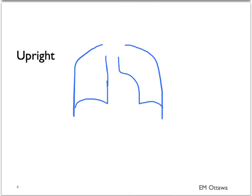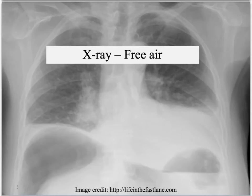In an upright patient, this free air will rise in the top part of the peritoneum, in this case, just underneath the diaphragm. On an x-ray, it will look like this.